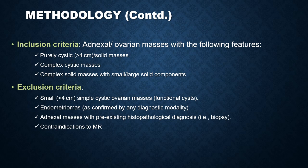The inclusion criteria included adnexal or ovarian masses with the following features: purely cystic masses more than 4 cm in size, or solid masses, complex cystic masses, or complex solid masses with small or large solid components. We excluded small functional cysts less than 4 cm, simple cysts less than 4 cm, endometriomas confirmed by ultrasound, MRI, or laparoscopy, adnexal masses with a pre-existing HPE diagnosis like a biopsy, and general contraindications to MRI including implants and metallic artifacts.